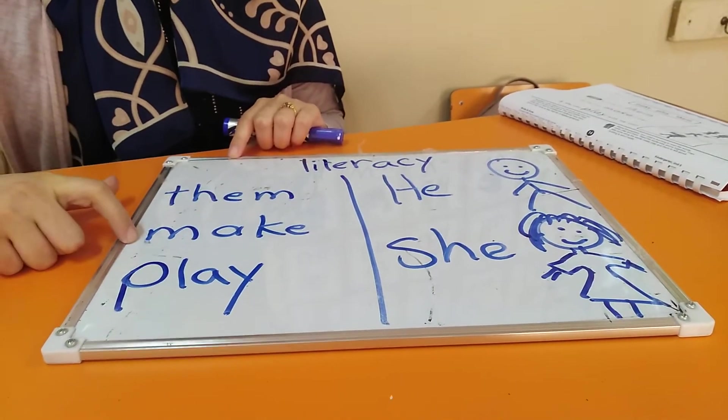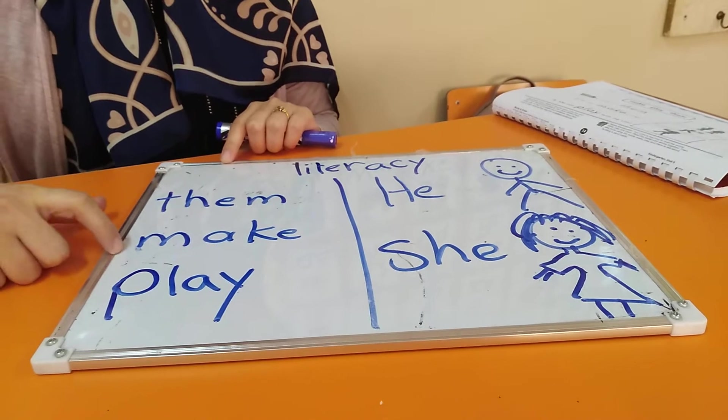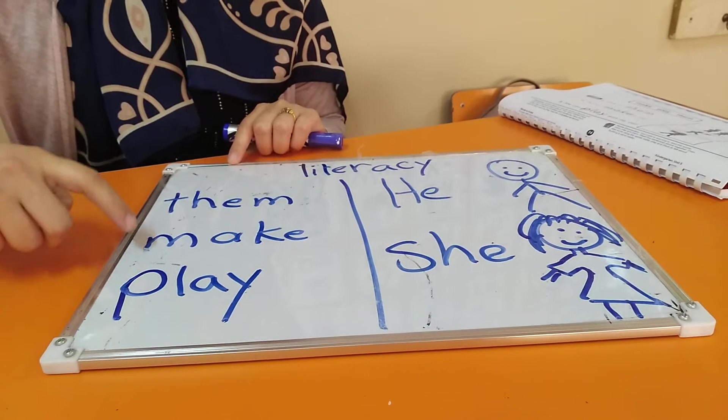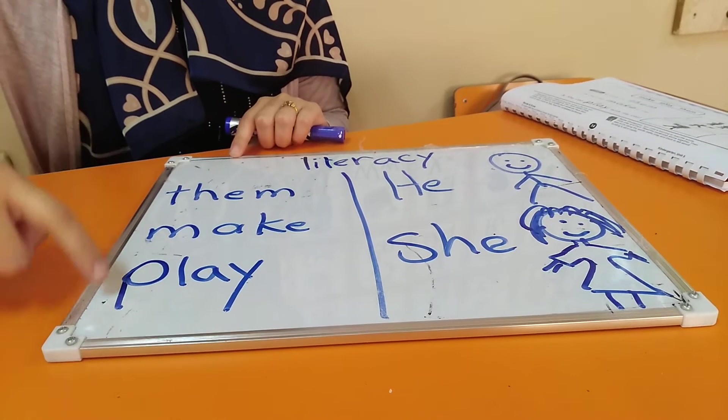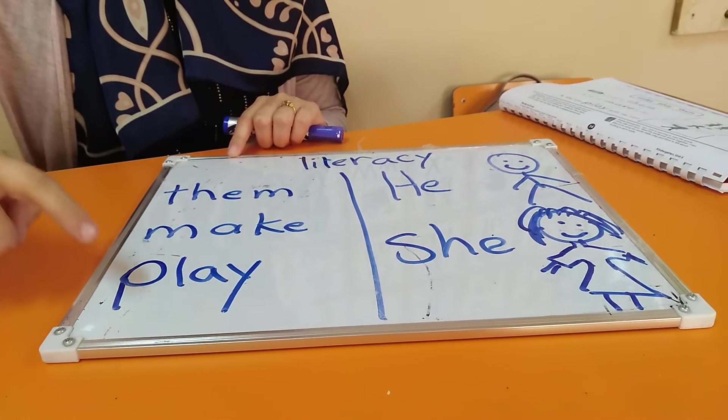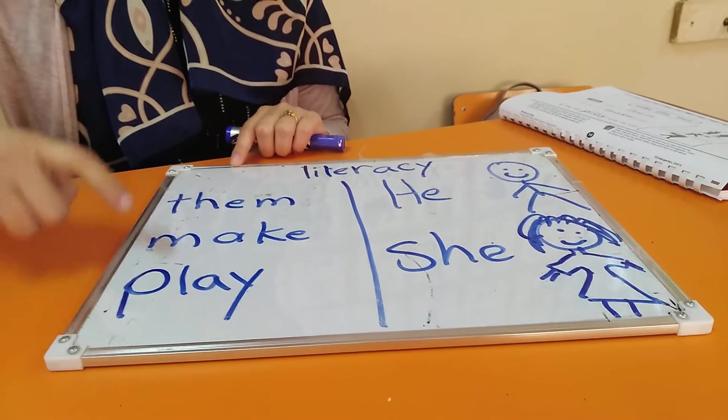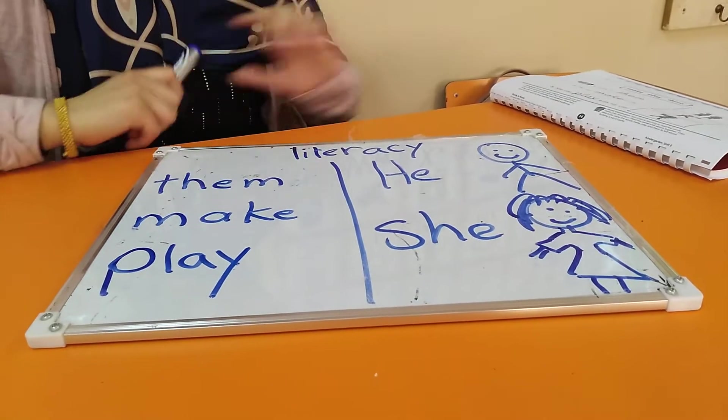Them and make. Them and make. Them, them, them, them. Make, make, make. Play and make. Play and make. Play and make. Play, play, play, play. Make, make, make. Okay.